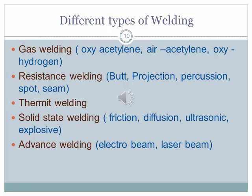Other types of welding include resistance welding — such as butt welding, projection welding, percussion welding, spot welding, and seam welding — thermit welding, solid state welding like friction welding, diffusion, ultrasonic, and explosive welding. Advanced welding technologies like electron beam welding and laser beam welding are also being developed and utilized in industries.